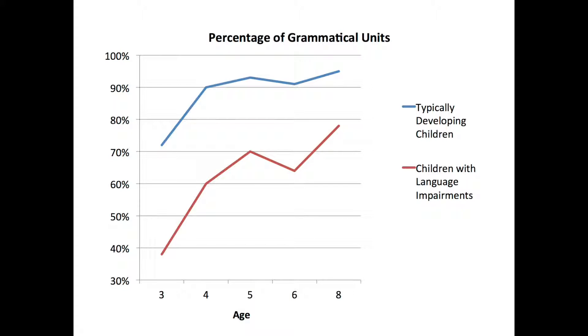We know that children with language impairments have more ungrammatical utterances. For example, at age three, children with language impairments have around thirty-eight percent utterances that are grammatical — that's a really big difference compared to the seventy percent we see in typically developing children. And by age four, children with language impairments are around sixty percent grammatical, and by age eight they only go up to about seventy-eight percent.